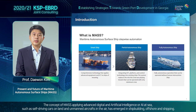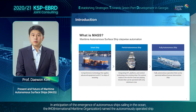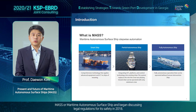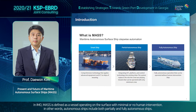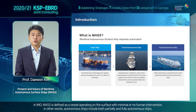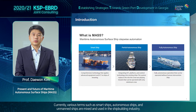The concept of MASS applies advanced digital and artificial intelligence, or AI, at sea, such as self-driving cars on land and unmanned aircraft in the air, and has emerged in shipbuilding, offshore, and shipping. In anticipation of the emergence of autonomous ships sailing in the ocean, the IMO named the autonomously operated ship MASS, or Maritime Autonomous Surface Ship, and began discussing legal regulations for its safety in 2018. In IMO, MASS is defined as a vessel operating on the surface with minimal or no human intervention. In other words, autonomous ships include both partially and fully autonomous ships. Currently, various terms such as smart ship, autonomous ship, and unmanned ships are mixed and used in the shipbuilding industry.